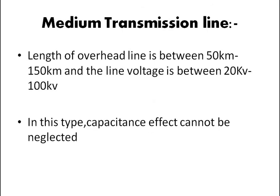In medium transmission line, the length of the transmission line can be between 50 to 150 kilometers, and the line voltage is between 20 to 100 kilovolt. The voltage and length of line are both increasing, so here we have to include the capacitance effect. In this type of line, capacitance effect cannot be neglected and must be included while studying the transmission line.